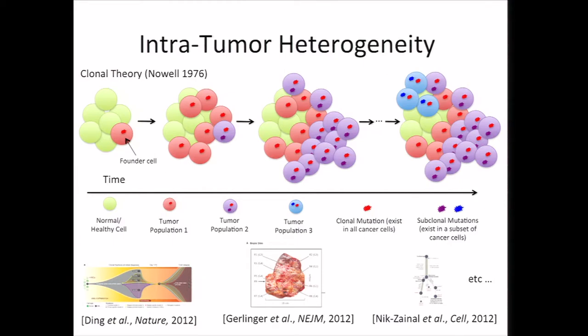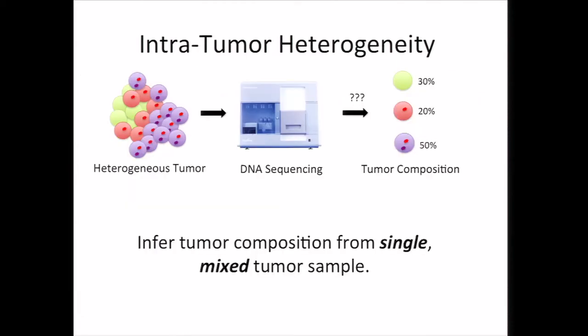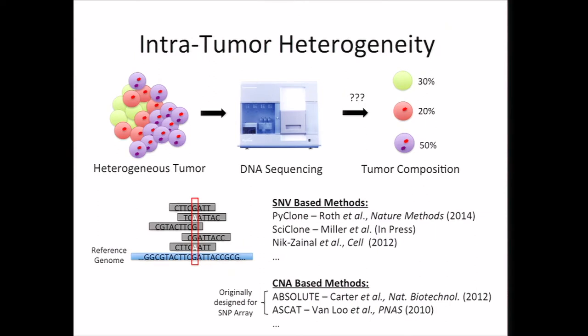Given the proliferation of sequencing data from modest coverage from many things like TCGA, this really led us to ask the question of how can you actually infer tumor composition from a single mixed tumor sample? Most of these methods fall into two different categories. The first is what I'll call SNV-based methods, which utilize clustering of variant allele frequencies, or the fraction of reads that indicate an SNV, in order to determine tumor composition.